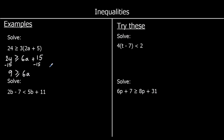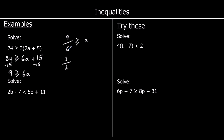Now a is multiplied by 6, so I'll divide both sides by 6. That gives 9/6 ≥ a. Simplifying 9/6 — both are in the 3 times table — gives 3/2 ≥ a. If I want to write a first, a is on the smaller side, so a ≤ 3/2, which I can also write as 1.5.